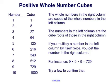Here we have a list of positive whole number cubes. The whole numbers in the right column are cubes of the whole numbers in the left column, and the numbers in the left column are the cube roots of those in the right column. If you multiply a number in the left column by itself three times, you get the number in the right column. For instance, we have the number 9 and its cube, 729.